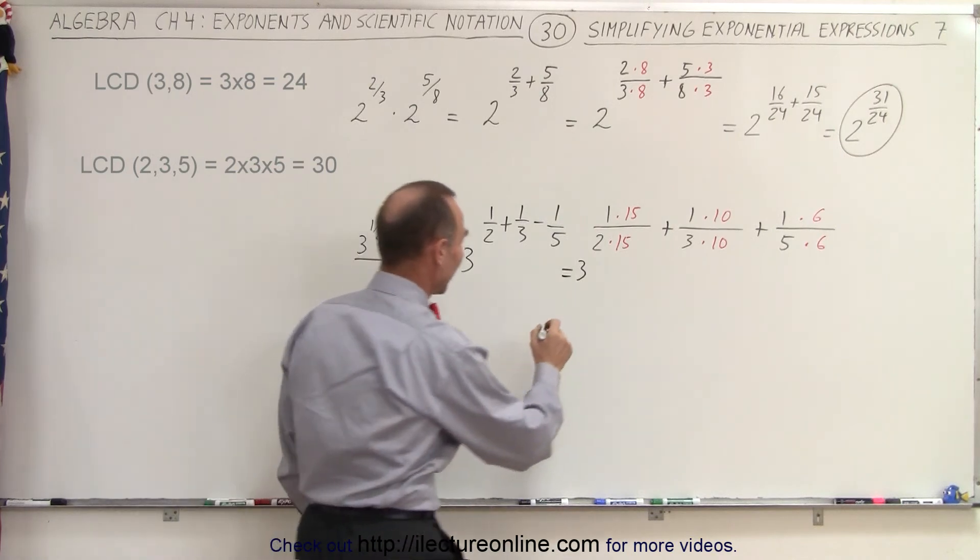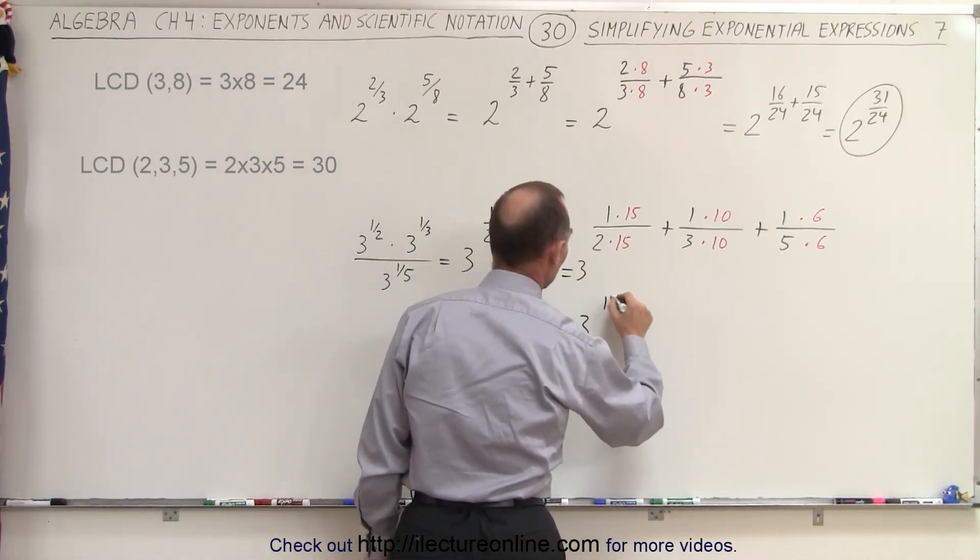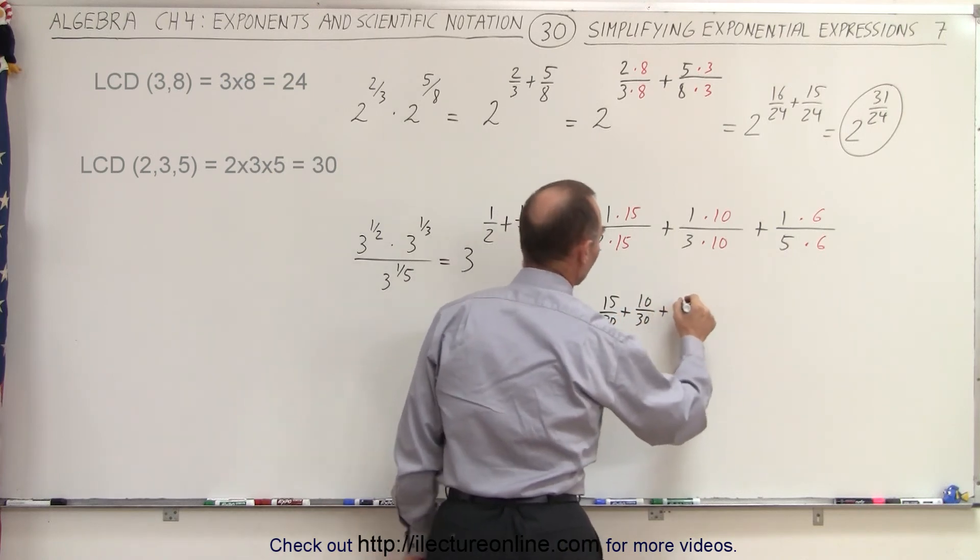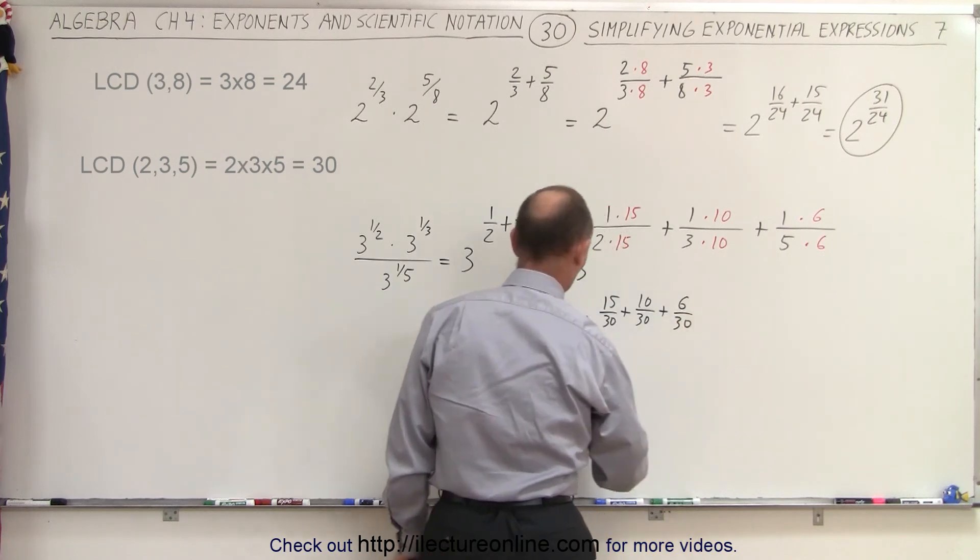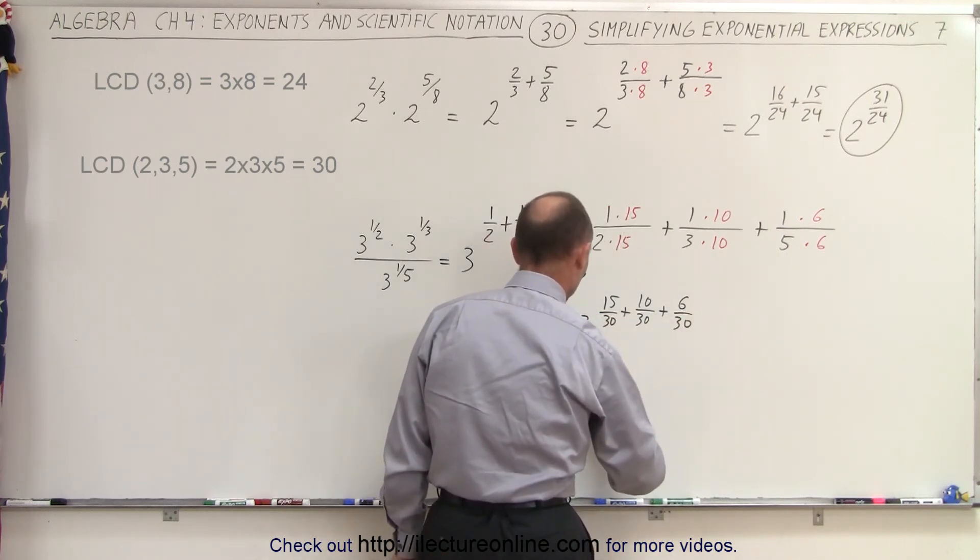So now we can simplify that. This is equal to 3 to the 15/30 plus 10/30 plus 6/30, or this is equal to 3 to the 31/30.